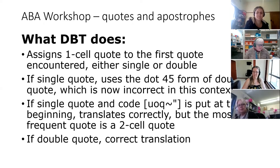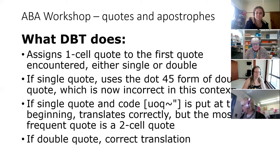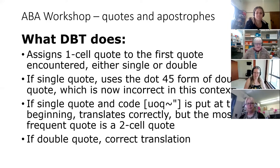What does DBT do? It assigns a one-cell quote to the first quote encountered, whether single or double. If a single quote is encountered first, it will use the dot-five form for double quotes, which is now incorrect. If the code UOQ tilde double-quote is placed at the beginning of the document, translation will be correct but the most frequent quote will be a two-cell form. If a double quote is the first encountered, you will get correct translation.